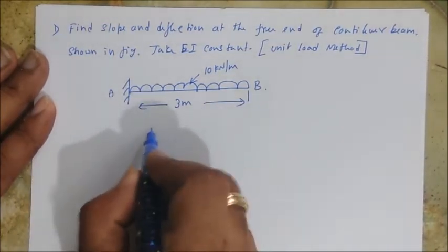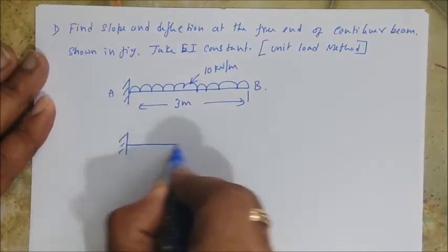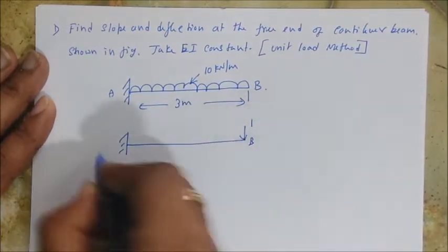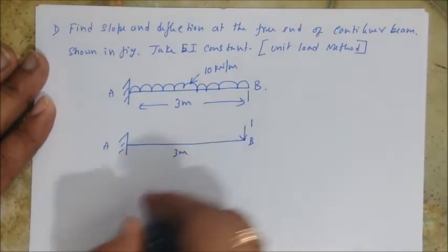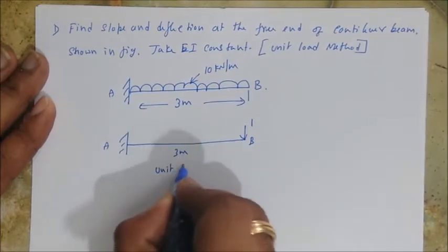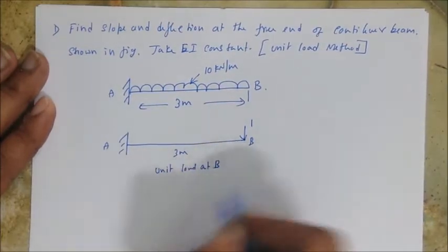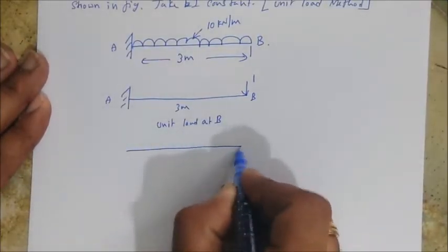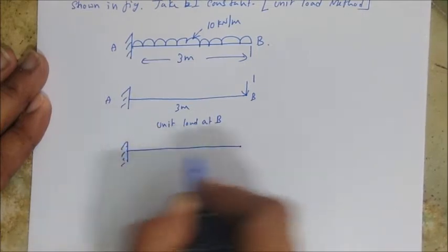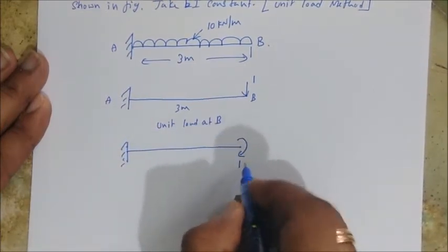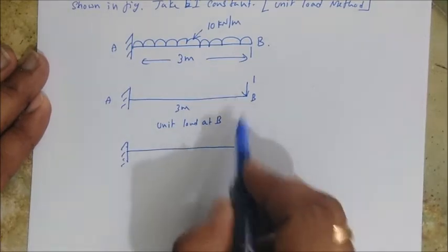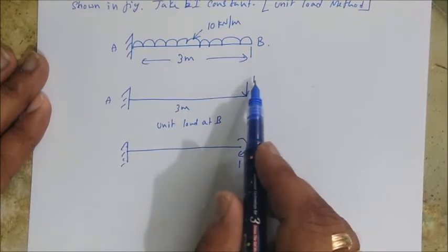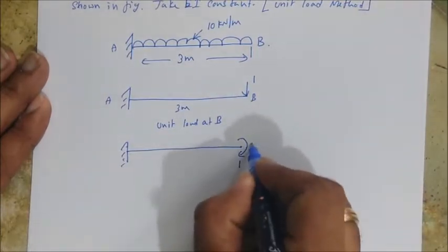I'll write for the cantilever beam one more cantilever beam with the unit load, 1 kN at B. So this is 3 meter. Unit load at B. Now to find the slope I need to apply one more unit load at B, but it is a unit moment. So we need to apply unit moment here. I'm not giving the unit for this one since it's a unit load.